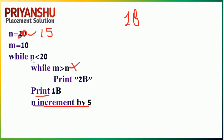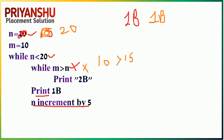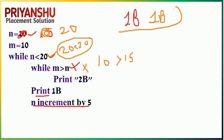Again the outer condition: 15 is less than 20 — true. Inner loop: m=10, n=15, so m is not greater than n — false. Inner loop not executed. Prints 1b again. Then n incremented by 5 to become 20. Now 20 is not less than 20, so the outer loop stops. The answer is: 1b printed two times.